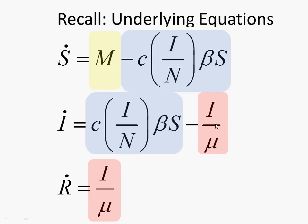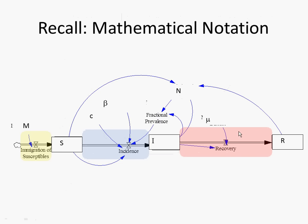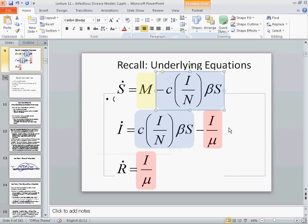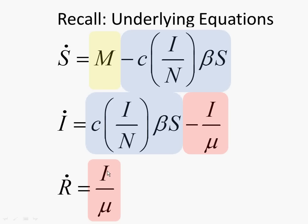We have one flow out of the infective stock — to be consistent I should include the minus sign — and then the flow into the R stock. Fundamentally, we're capturing the inflows and outflows associated with stocks, or state variables, and there are different terms that contribute to the derivative. Any questions about this? Because we're going to be relying on it quite a lot.